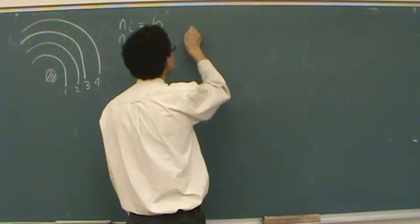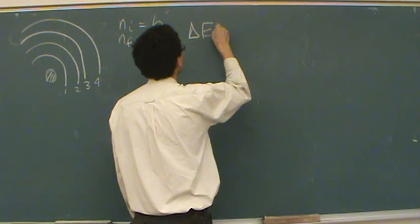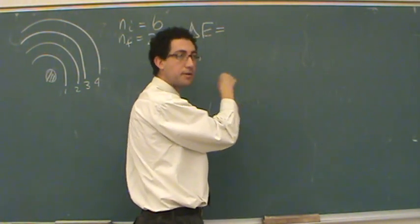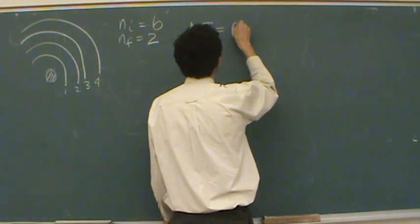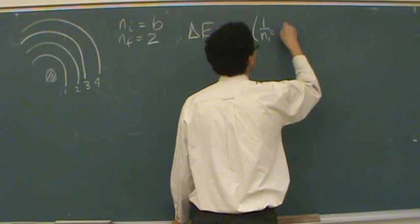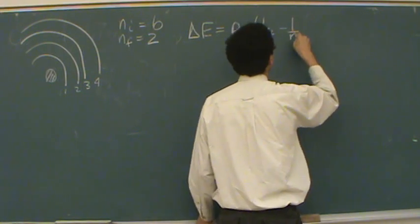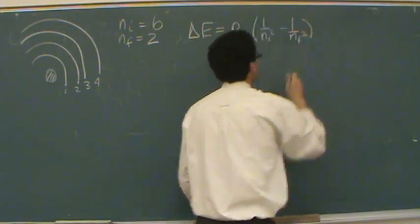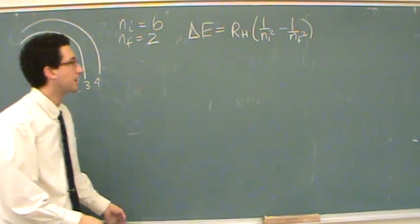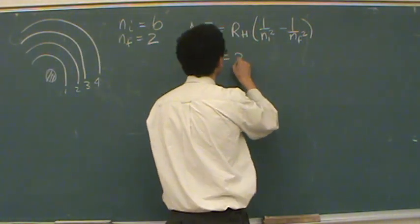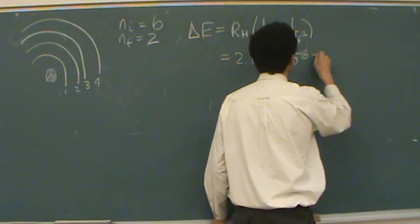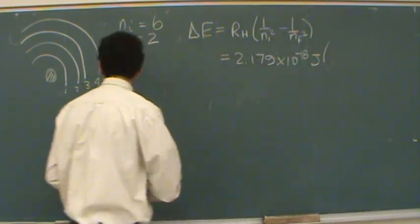So then you'd apply the Rydberg equation. And you can calculate the energy required for this change of orbits. Okay. And this would be for a single electron system. And so let's plug in 2.179 times 10 to the minus 18 joules. That's the Rydberg constant.